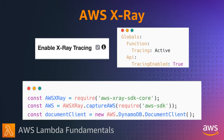To use X-Ray in Lambda, you can activate it in the Lambda console for a selected function or enable it in your Infrastructure as Code template. You may also need to activate X-Ray for any other service you use, such as API Gateway or Step Functions.